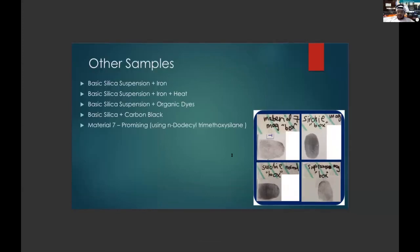I also did some other samples like basic silica with suspension and iron, trying to make the silica magnetized powder. And I even used organic dyes. I used carbon black, trying to mix it with silica to change the formation of the silica bonding to try and let it become a different color. I was not successful doing this. Almost all of the other samples, only material seven was giving me some promising results as you can see in the picture.